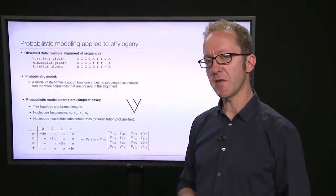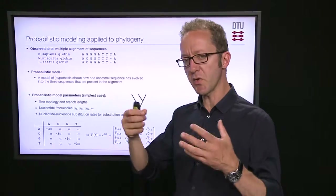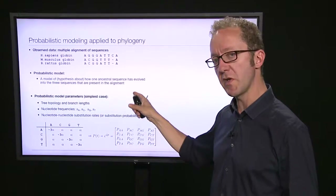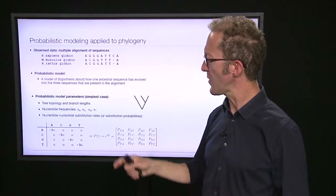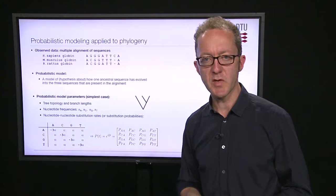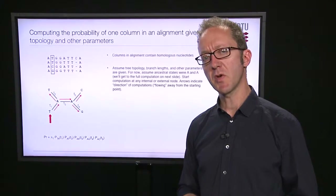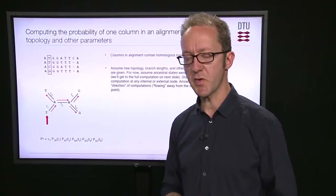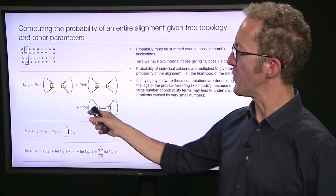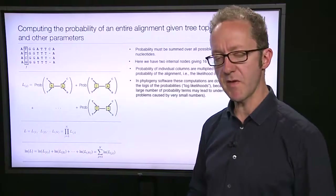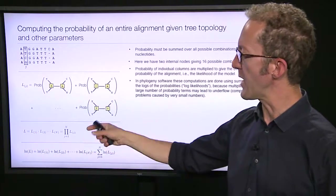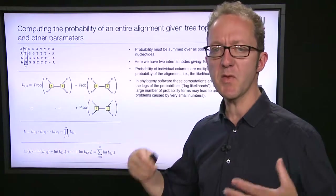In the case of phylogeny, our dataset is an alignment. Our model is a model of how one sequence has evolved into the set of present-day sequences. Parameters include the tree shape, branch lengths, nucleotide frequencies, and nucleotide-nucleotide substitution rates. You compute the likelihood of an alignment one column at a time, summing over all possible ancestral sets of nucleotides. This gives you the overall probability of one column; you then repeat for the other columns and multiply to get the overall probability of your entire alignment — the overall likelihood.